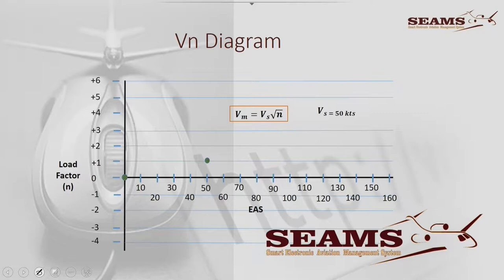Just one or two things to make sure: VN, maneuver stalling speed, equals basic stalling speed times the square root of N. And in our example, the basic stalling speed is 50 knots. And that will always be at 1G. So that's the first point.